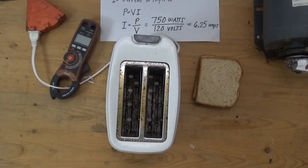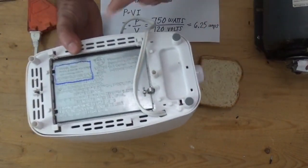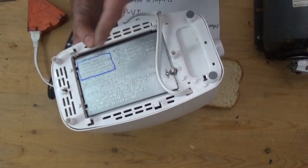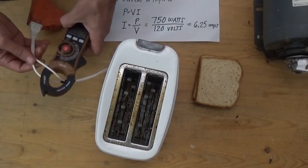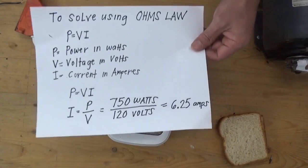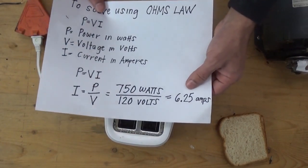Welcome to Ohm's Law practical exercise. Here we have a bread toaster with ratings of 750 watts and 120 volts, and I have connected in series my clamp ammeter.